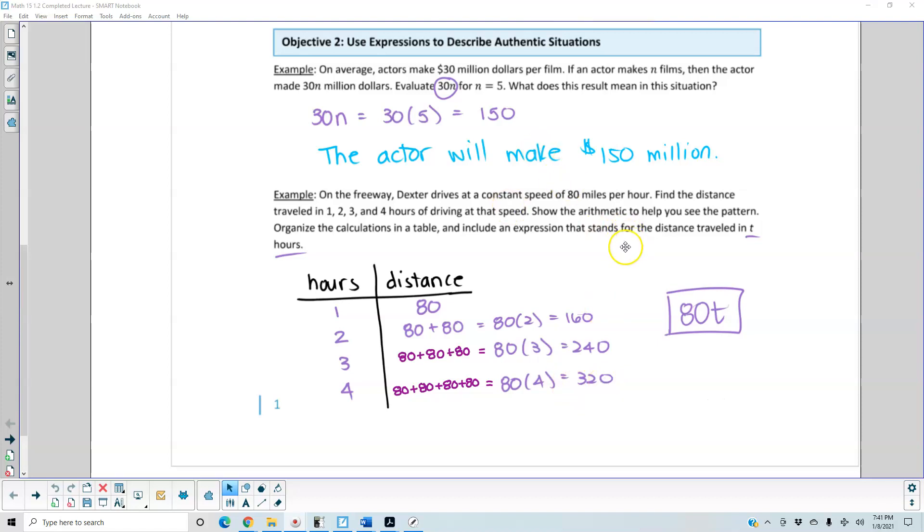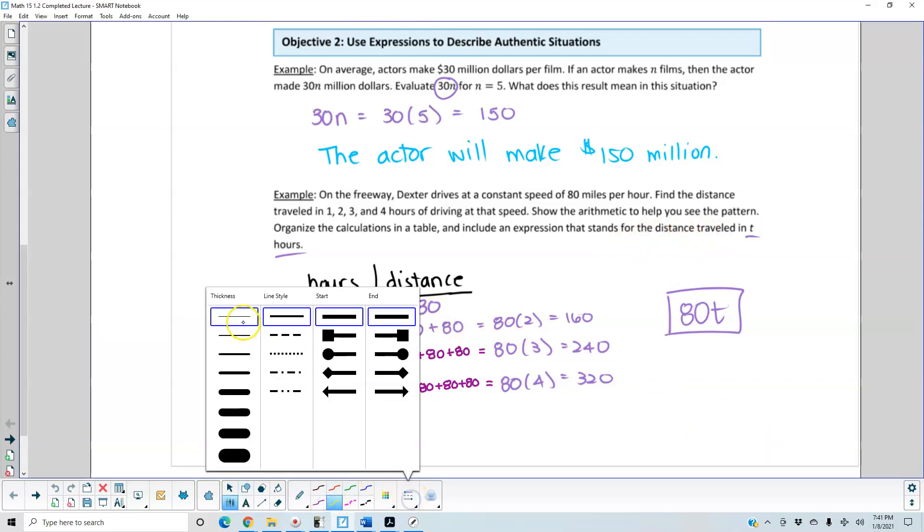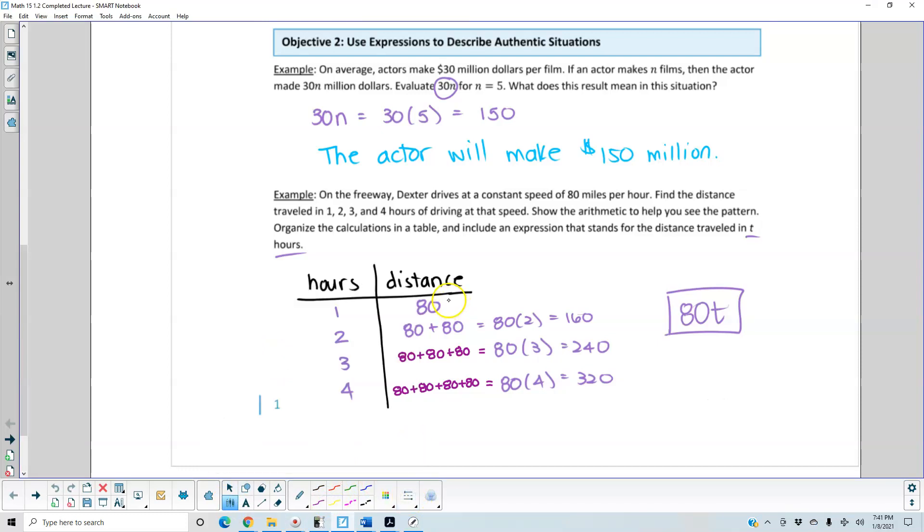Now, if we want to write an expression that stands for the distance traveled, we can see there's a pattern here. What does this pattern tell us? If you take a look at this, we know that this is 80 times 1, and that's 1 hour, which gives us 80. Then we have 80 times 2, 80 times 3, and 80 times 4. When we look at this in terms of t, this would be 80 times t, which gives us that expression.